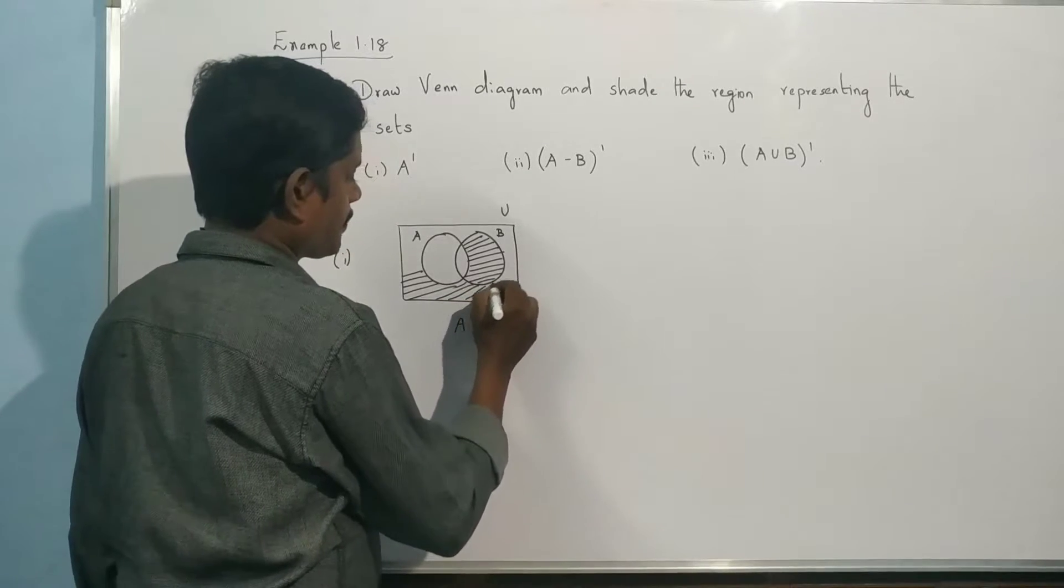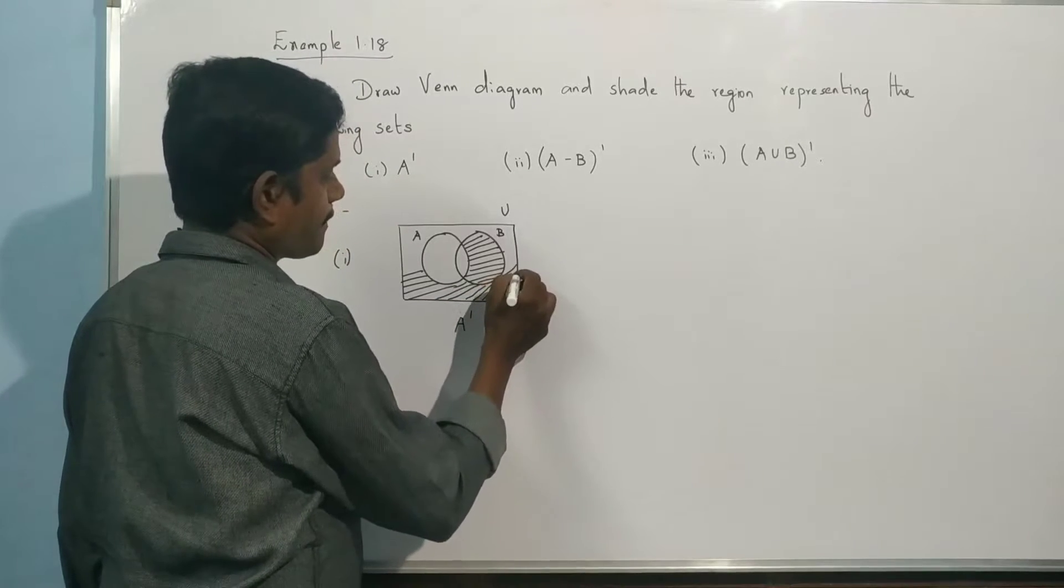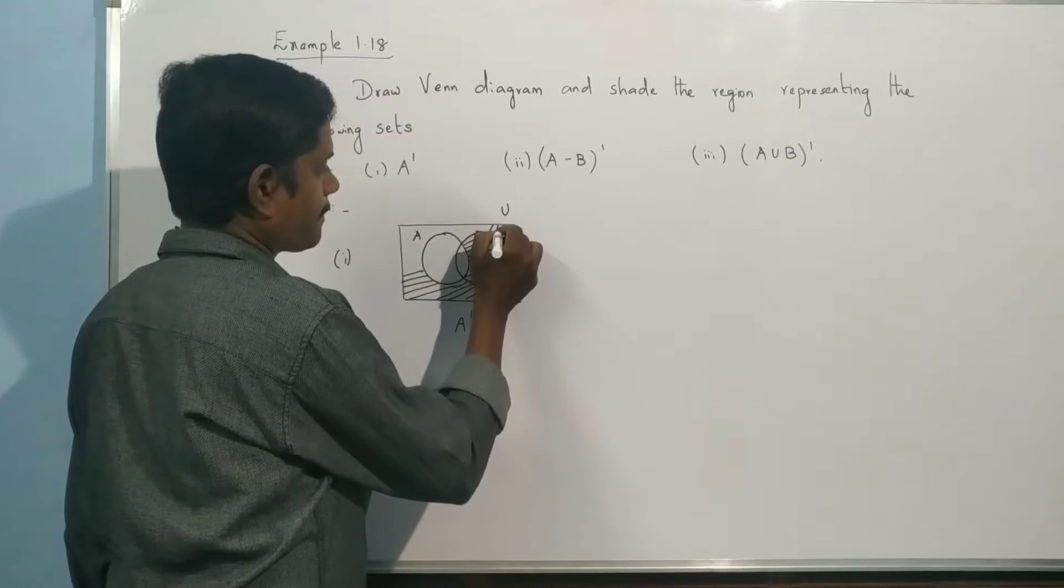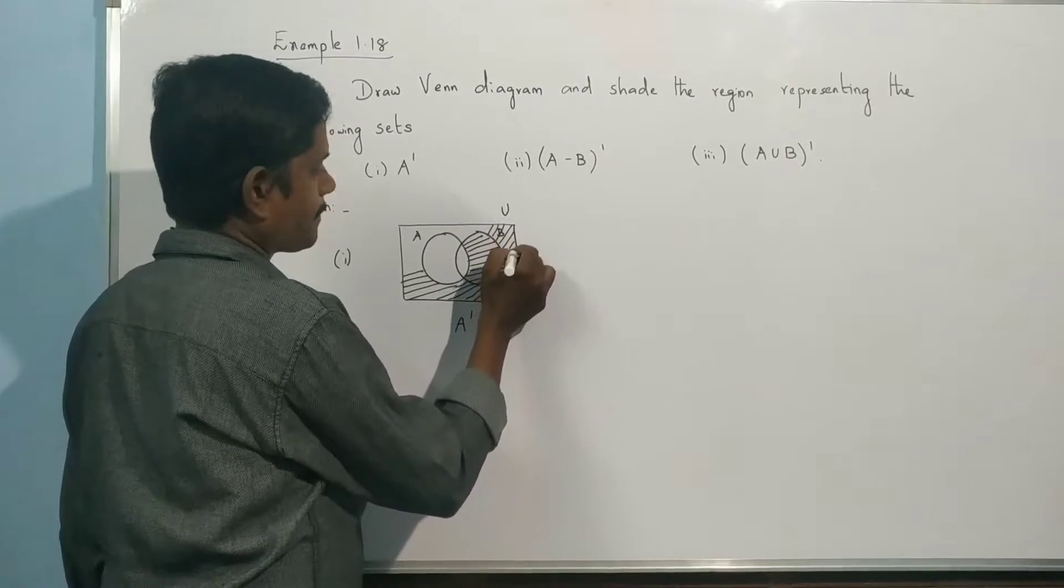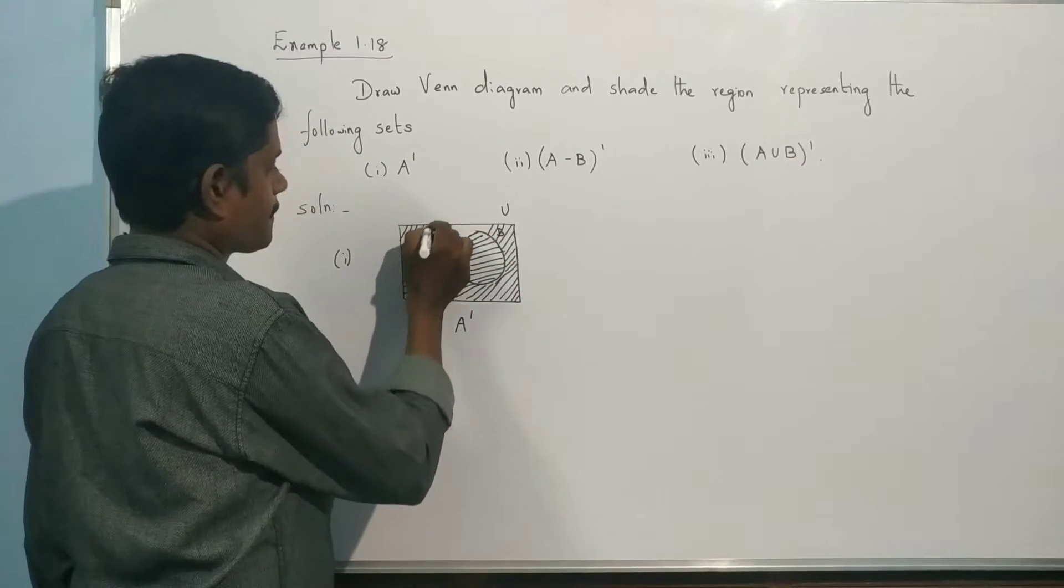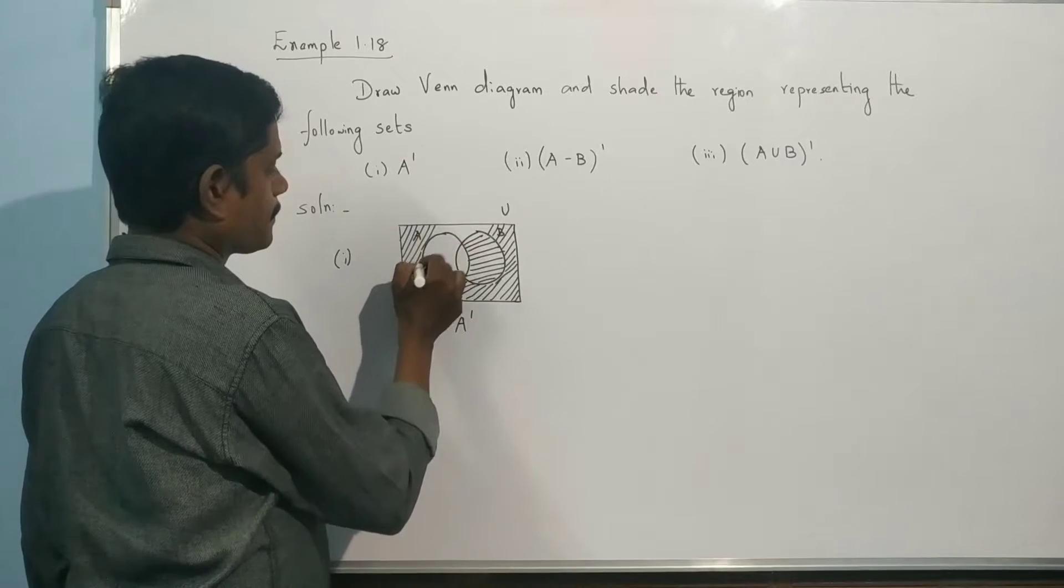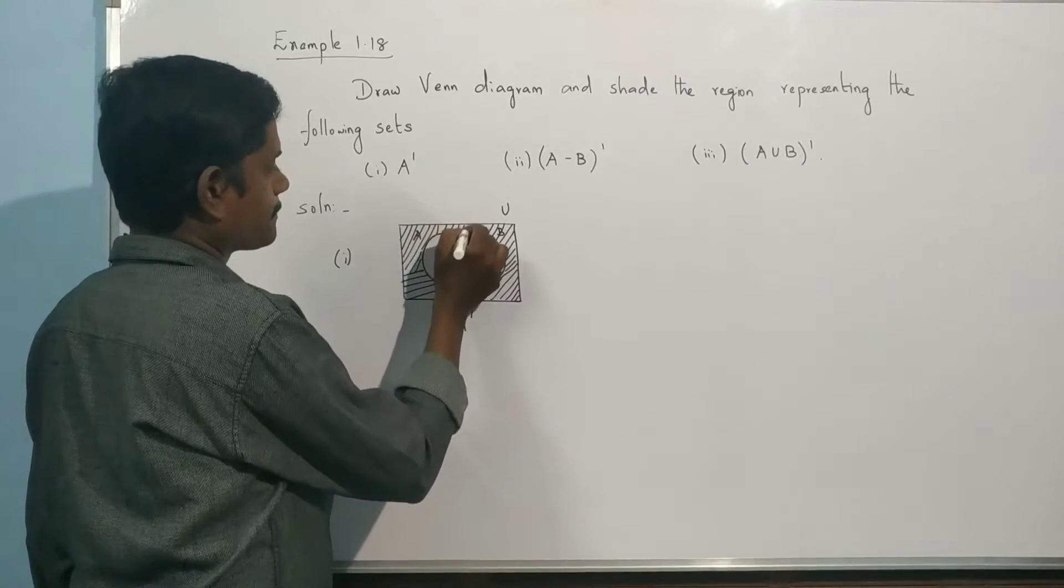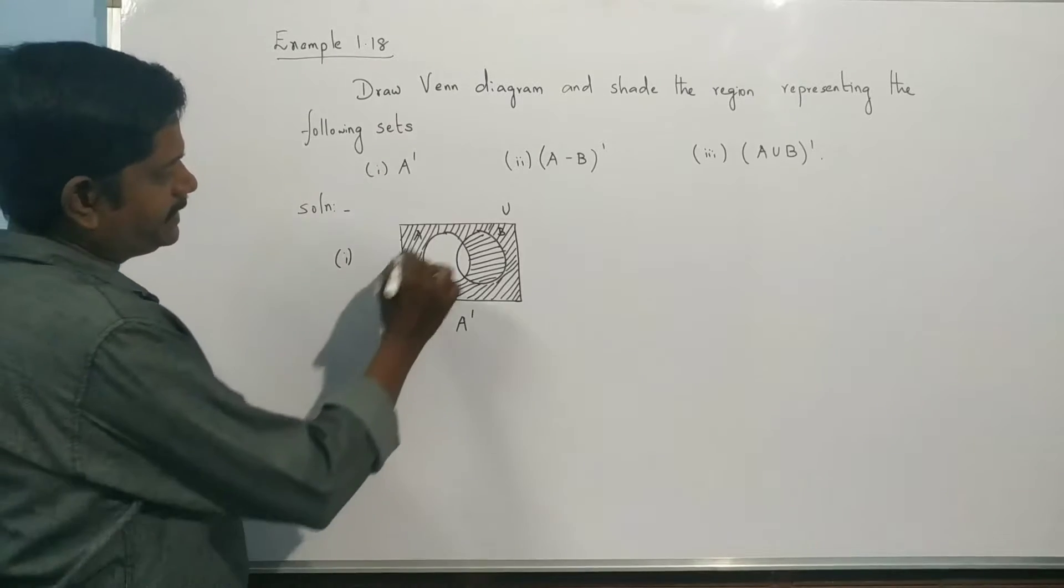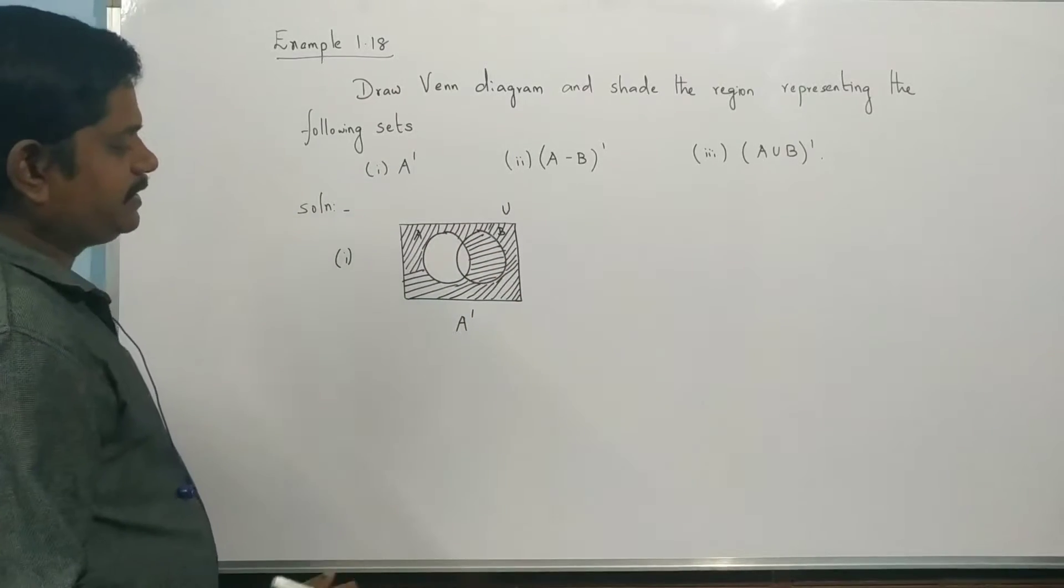We shade it. So A was there, now we shade the remaining area. This is the A dash.